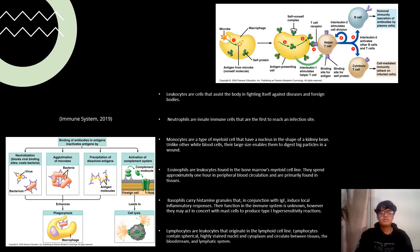Leukocytes are generally referred to as white blood cells. They are a critical component of the immune system that assist the body in fighting diseases. Neutrophils play a significant role in the immunological response. They are innate immune cells that are the first to reach an infectious site. In response to injury or pathogen, tissue releases chemokines that attract neutrophils through a method called chemotaxis.